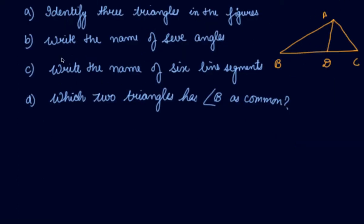This is the figure and they have asked you to identify the three triangles in the figure. A, B, C is one triangle. A, B, D is the other triangle, and A, D, C is the other triangle. So there is one full triangle and two half triangles — three triangles in this. Number one is triangle ABC, the full triangle.